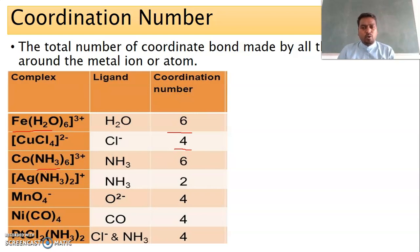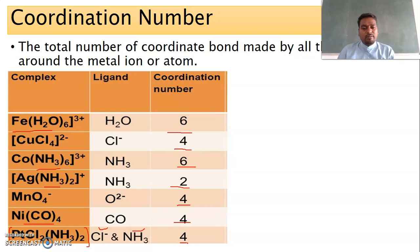In the hexaamminecobalt(III) complex, there are six ammonia ligands, so the coordination number is six. In the silver complex, it has two ammonia ligands, so the coordination number is two. For nickel tetracarbonyl, the coordination number is four — there are four oxygen-bearing groups forming four bonds. In a dichloro-diammine complex, there are two amine and two chloride ligands — all monodentate — giving a total of four, so the coordination number is four. It's very simple: the number of monodentate ligands in the coordination sphere is the coordination number.